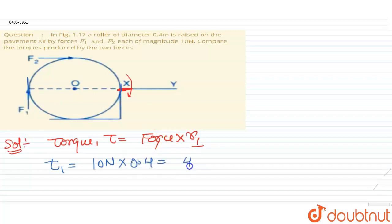So it will be 0.4 meters. So the radius of the roller will be 0.4 diameter by 2, diameter divided by 2, so it will be 0.2. That will be 2 newton meter.